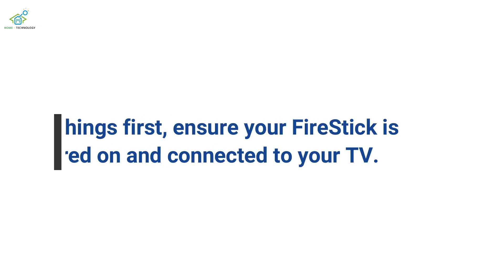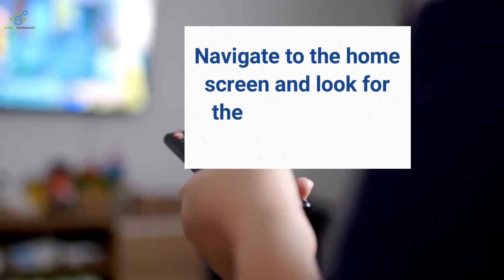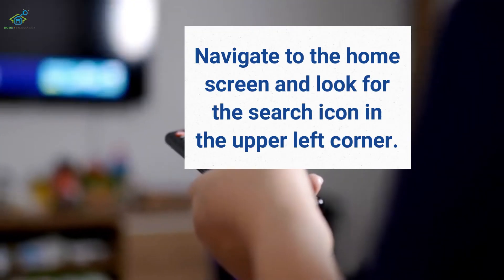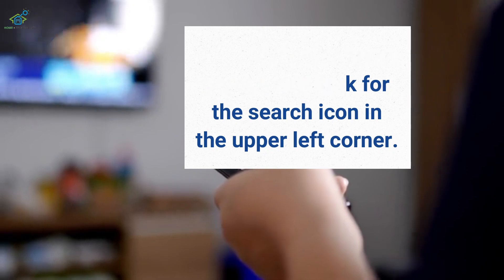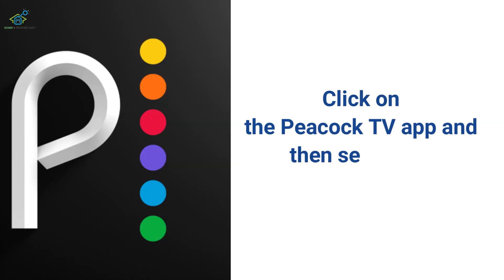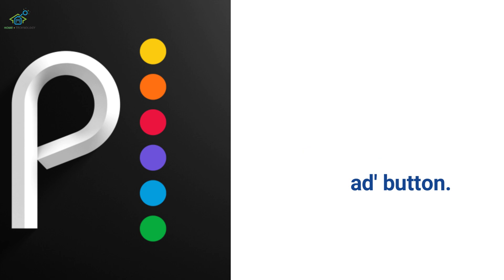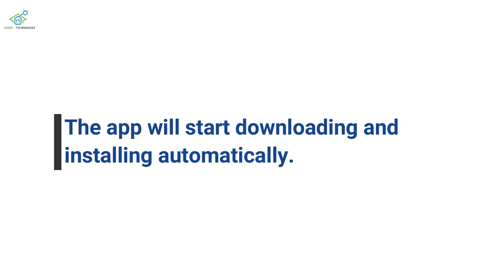First things first, ensure your Fire Stick is powered on and connected to your TV. Navigate to the home screen and look for the search icon in the upper left corner. Click on it and type in Peacock. You'll see the Peacock TV app in the search results. Click on it and then select the download button. The app will start downloading and installing automatically.